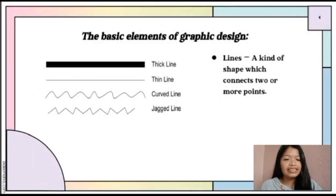The first is lines. A line is a kind of shape which connects two or more points. It is also considered one of the essential elements of graphic design. Lines can be thick, thin, curved, or jagged. And these are lines when we apply them in patterns.